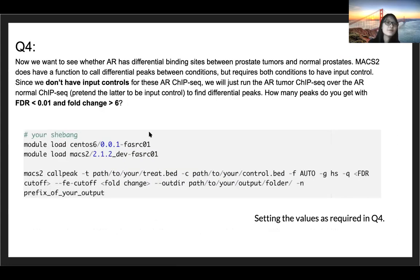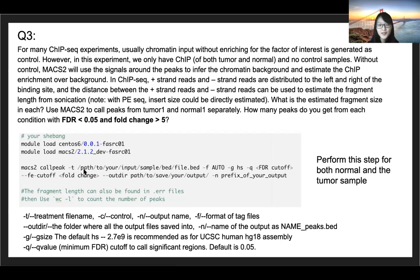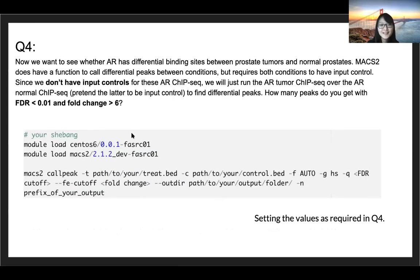For question four, in the previous step MACS2 can perform peak calling without a control. That's why we only have -t here but we don't have -c, because we don't have a control file. The normal sample is not the background DNA input control. But in question four we're saying, since we actually don't have that control file, you can just use the normal sample as a control. That's why we're doing -c and you can just put your normal file here. Then you can just change FDR and fold change to the corresponding values in this command.